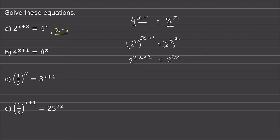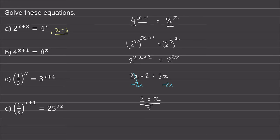Now we can make the powers equal because the bases are the same. So 2x plus 2 is equal to 3x. We can solve this equation by taking 2x from both sides — these will cancel — so we're left with 2 is equal to x. And this is our solution.